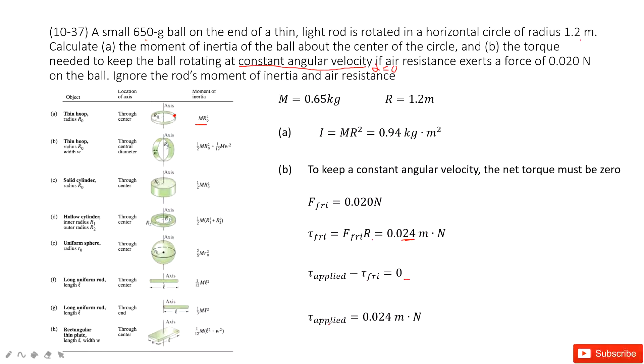Now we can see that means the torque applied equals torque friction. So then we find the applied torque just equals the friction torque, 0.024 meter times newton. Thank you.